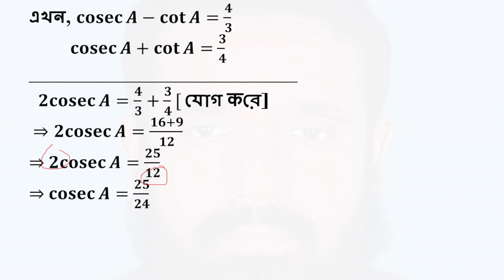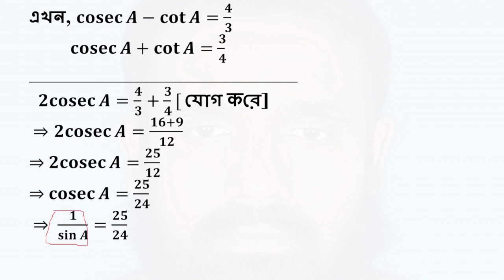So the value XA is equal to 25 by 24. The XA is equal to 25 by 24. The XA is equal to 24. So the sine is equal to sine. We have cos² equal to 1 minus sine².